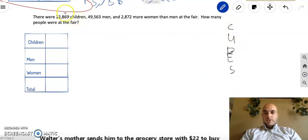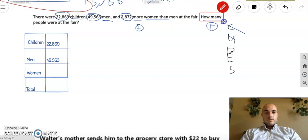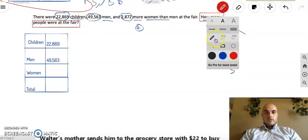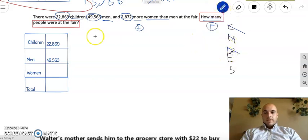OK. Now let's go through my cubes method. I'm going to circle important numbers. 22,869, they give that to me right off the bat. I'm going to put that right in my chart. I'm not even going to wait. 49,563 men. I'm going to put that in my chart as well. And then this one, 2,872 more. So I have to actually do something here with that one before I can put it in. So let's underline our key words. We're dealing with children, men, and women. There's also more here which tells me I'm adding. It's also how many people were at the fair. So this how many in this case is looking for a total, means I'm adding. Let's box the question. Eliminate. I can eliminate there were, and I can eliminate at the fair. There's really not a whole lot to eliminate this one. This one's just really short.